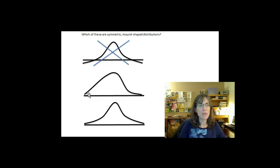And if you have a graph like that where it goes up and then has a long tail or anything along those lines, that's not going to be a symmetrical mound-shaped distribution, so this one also gets an X.